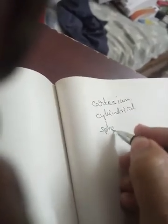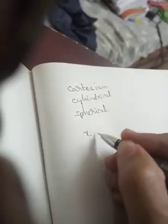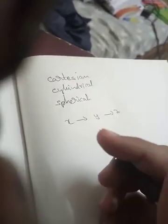And the third one is spherical. We know the Cartesian system which is X, Y, and Z. We call it a right-handed coordinate system.